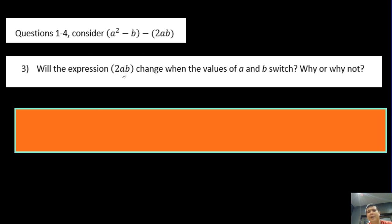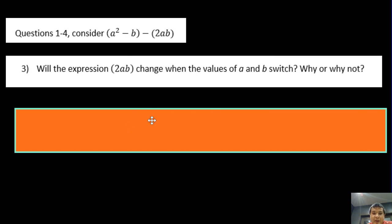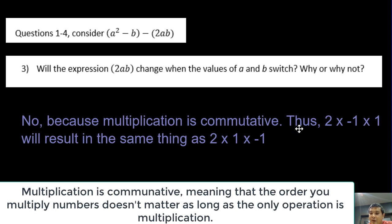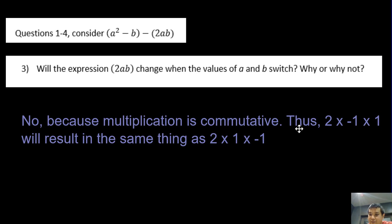The next question asks: will the expression 2ab change when the values of a and b switch? The answer is no, because multiplication is commutative — the order doesn't matter. 2 times negative 1 times 1 gives the same result as 2 times 1 times negative 1. As long as the numbers are the same, it doesn't matter what order you multiply them in.